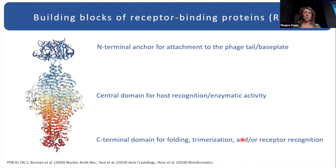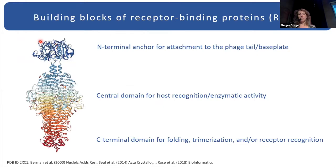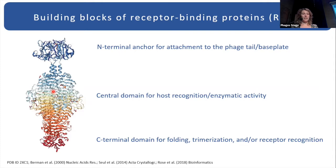Let's have a closer look at such an RBP. RBPs can be divided into at least two main building blocks. The first building block, which I will call the ANCHOR, is highly conserved among phages belonging to the same group, and it allows the RBP to be attached to the phage tail. The second building block, the enzymatic part, is responsible for actual host specificity and is highly specific.